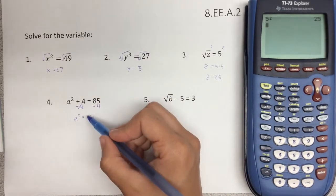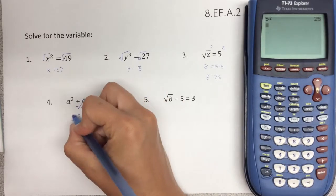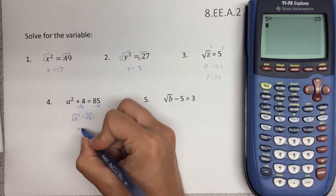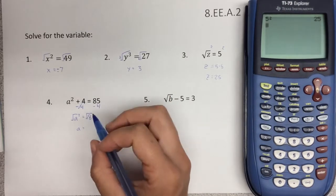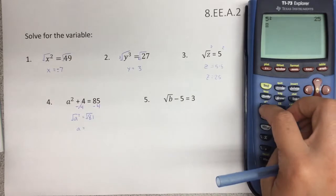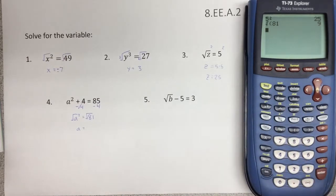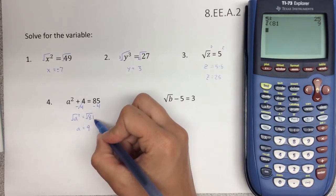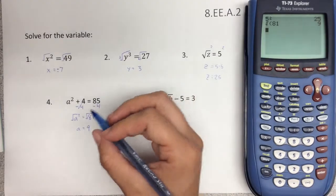And now just like number one, to get rid of that square, we want to do a square root to both sides. So the left-hand side, we're left with a. And on the right-hand side, the square root of 81, you're going to do your square root sign, type in 81, and that's going to be 9. And we can double-check ourselves. 9 times 9 equals 81, so we know we've taken the square root correctly.